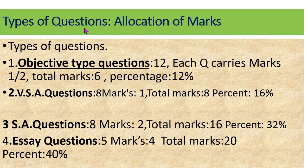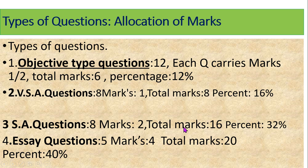Types of questions and allocation of marks: objective type questions — 12 questions, each carrying half a mark, total 6 marks, which is 12 percentage. The third type of questions in terms of marks percentage, and the fourth type is short answer (SA) questions. Each SA question carries 4 marks, with total marks of 20.